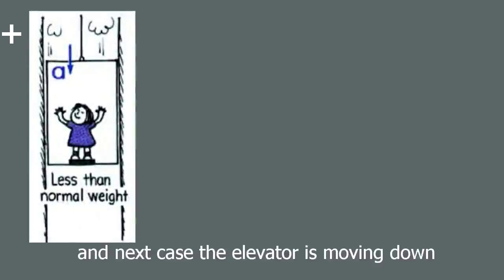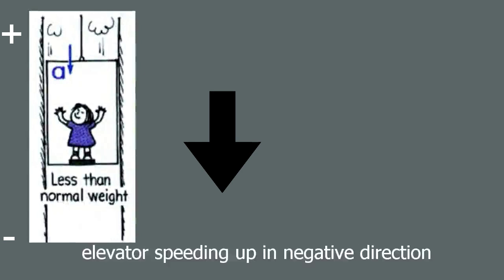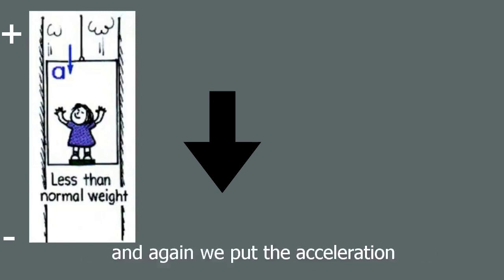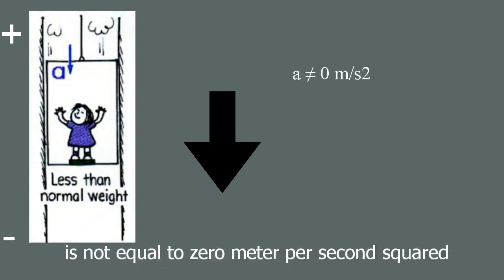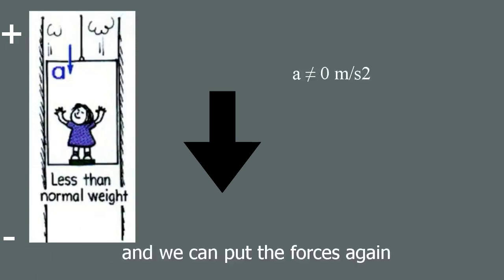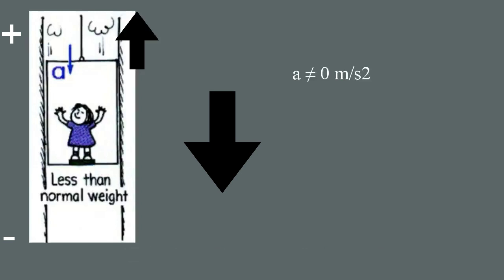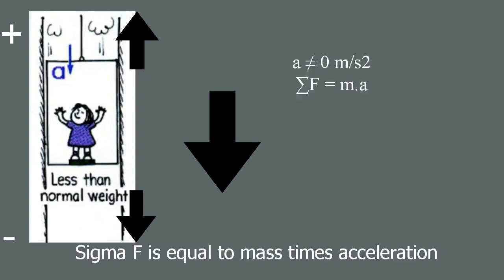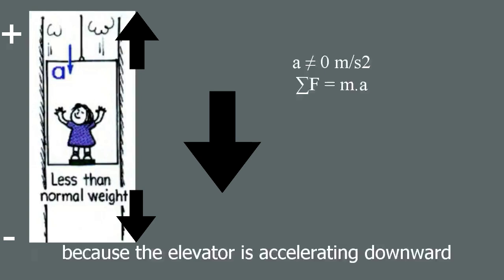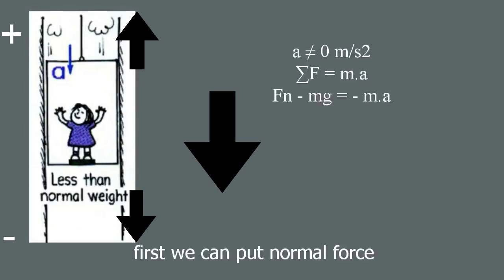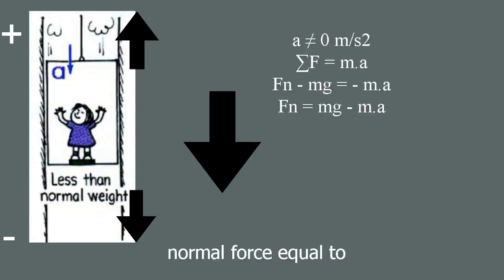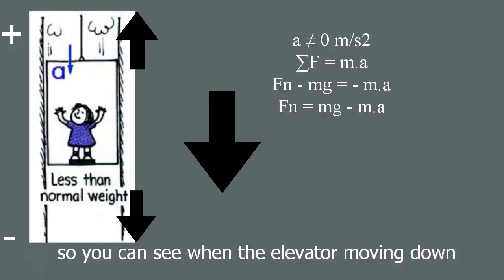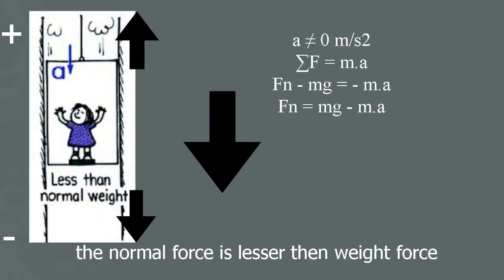Next, the elevator is moving down and has acceleration — speeding up in the negative direction. We draw the forces: normal force pushing up and weight force mg pulling down. Sigma F equals mass times acceleration, giving us: normal force minus weight equals negative ma, so normal force equals weight force minus ma. When the elevator accelerates downward, the normal force is less than the weight force.